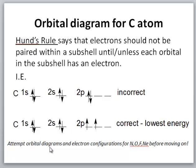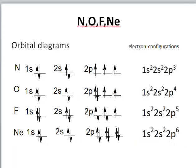At this point you can attempt orbital diagrams and electron configurations for nitrogen, oxygen, fluorine, and neon before moving on. Take a piece of paper and write down what this should look like and the electron configuration for everything else in the second row. Here are orbital diagrams and electron configurations for the remainder of the second row atoms of the periodic table — the orbital diagrams appear to the left and the corresponding electron configurations appear alongside.